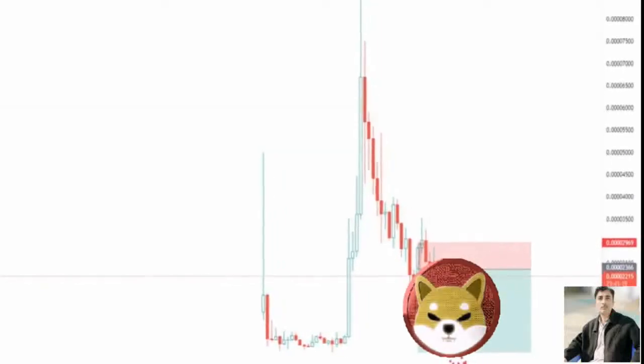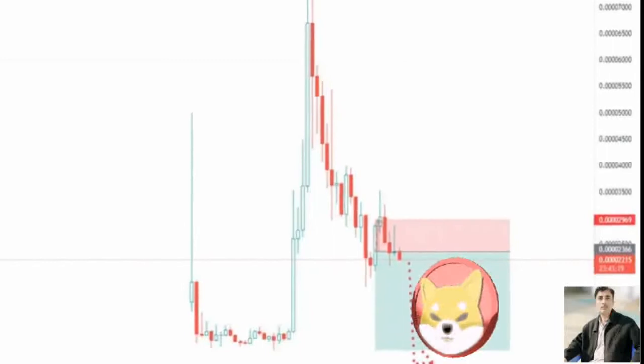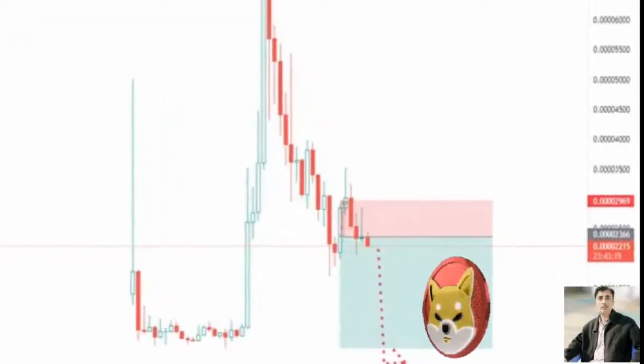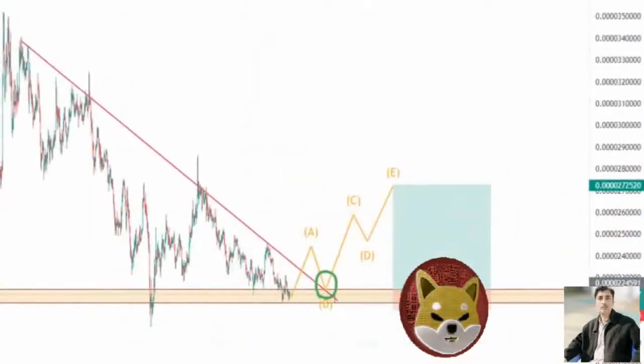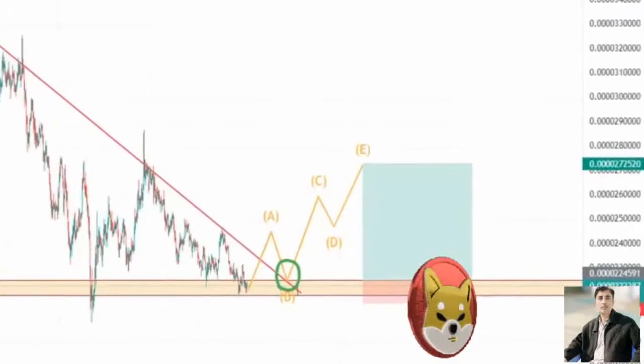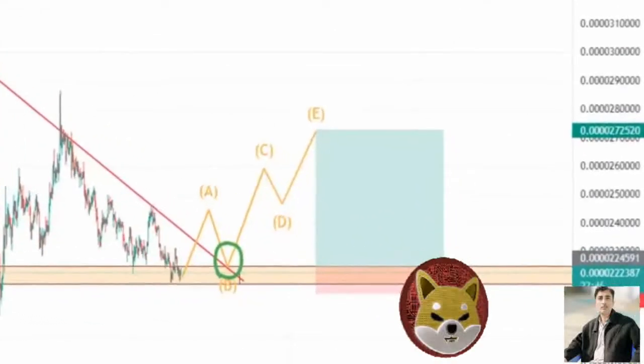That would mean a drop below 0.00002000 dollars and even through the 0.00001893 dollar level, which is the monthly S1 support, towards 0.00001704 dollars. This could possibly print a brief new yearly low before bulls will want to try and repurchase the dip later next week.